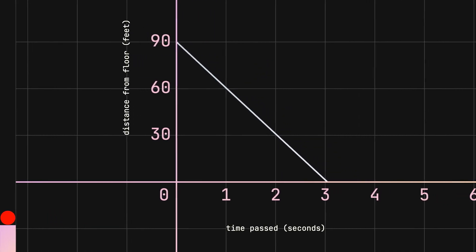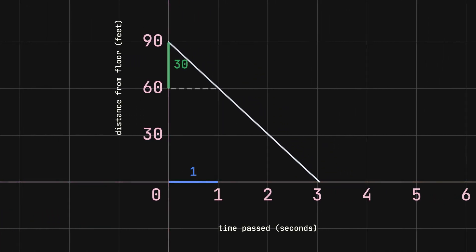In this unrealistic situation where speed never changes, after the first second, the ball falls by 30 feet, another 30 feet after another second, and the same 30 feet after another second.